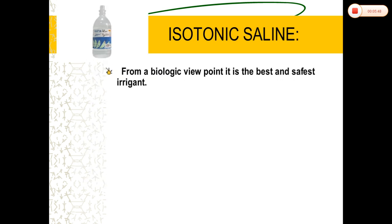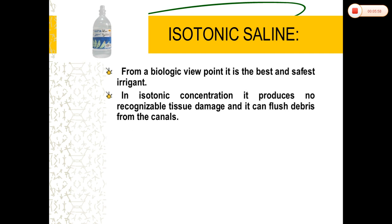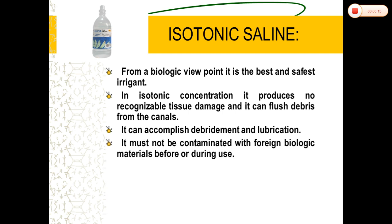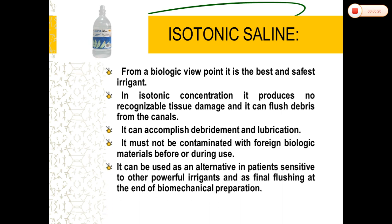Coming to saline: normal saline — 0.9% weight by volume — is commonly used in endodontics for gross debridement and lubrication of root canals because of its high flushing action. Since it is very mild in action, it can be used as an adjunct to chemical irrigants. It can also be used as a final rinse for root canals to remove any residual chemical irrigant left after root canal preparation. It is biocompatible in nature and has no adverse reaction even if extruded beyond the apex, because its osmotic pressure is the same as that of blood.